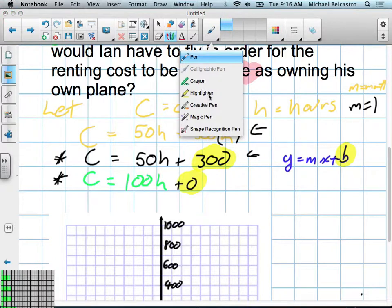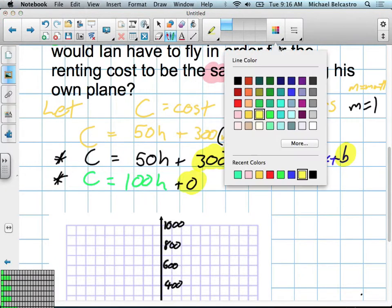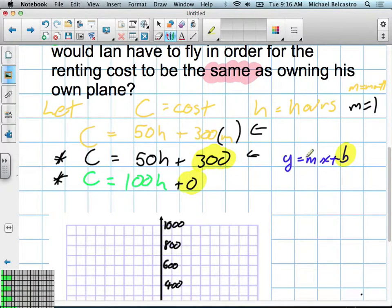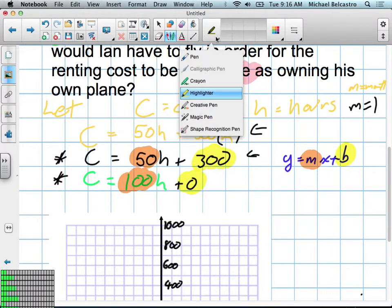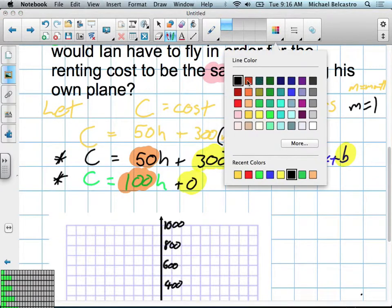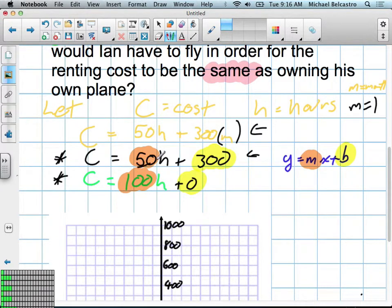Which then brings us to our variable cost or our slope. What is our slope? What is our slope or variable cost in the first one? 50. And in the second one? 100. Good. And we know we can make those fractions. What would they look like as fractions? 50 over what? 1. And 100 over? 1. Good.